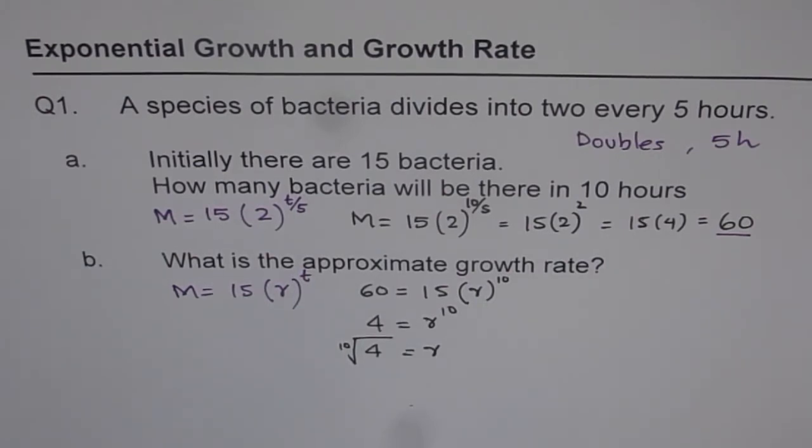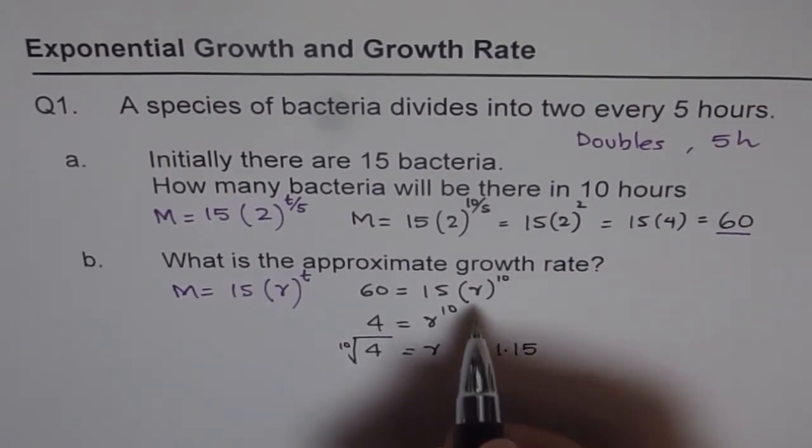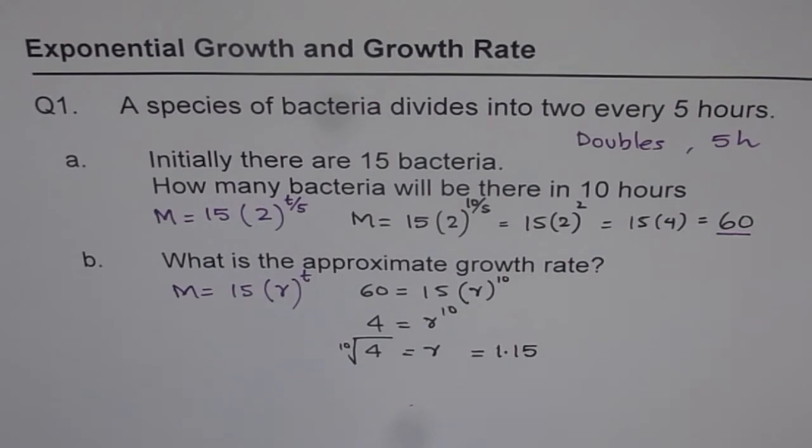Find 4 to the power of 1 over 10. It is equals to 1.15. So we get 1.15. So R is 1.15. So from here, what is the growth rate?